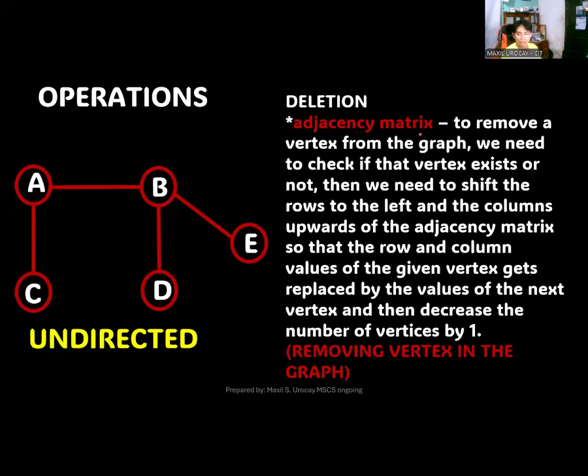For the adjacency matrix, to remove a vertex from the graph, we need to check if that vertex exists or not. Then we need to shift the rows to the left and the columns upwards of the adjacency matrix so that the row and column values of the given vertex gets replaced by the values of the next vertex, and then decrease the number of vertices by one.